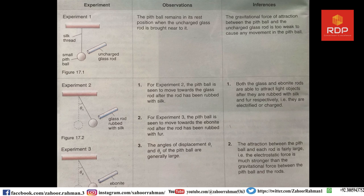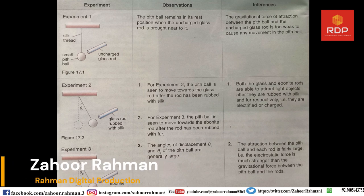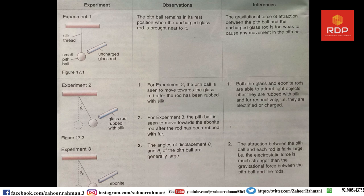Remember that there is a gravitational force between every object in our world. If there is a chair and a table, there is a gravitational force between those two objects, but it is very small and we cannot feel it. Similarly, there is a gravitational force between the pith ball and the uncharged glass rod, but it is too weak to cause any movement in the pith ball. Remember: when there is no charge, there will be no attraction between the two objects. This is the key conclusion of this experiment.